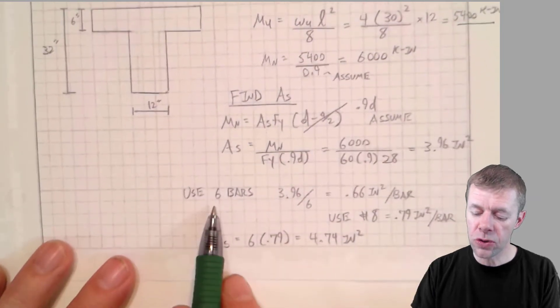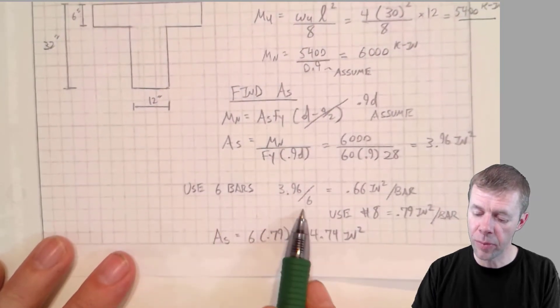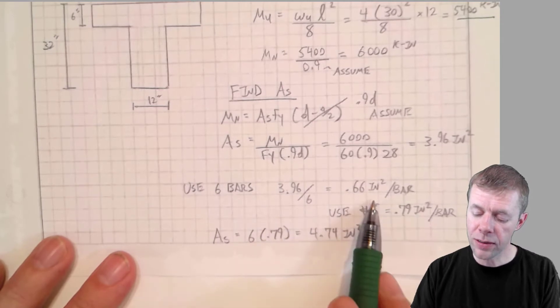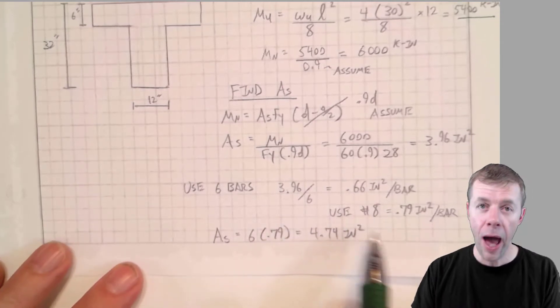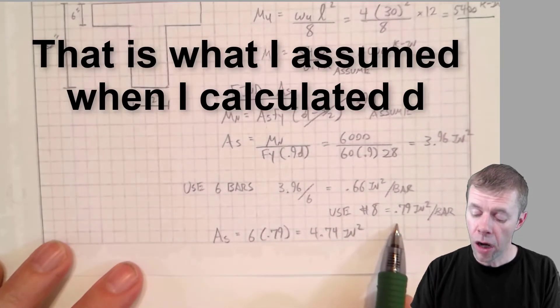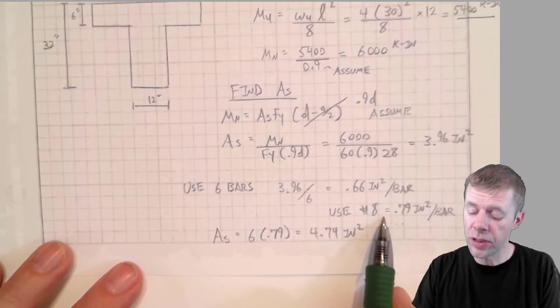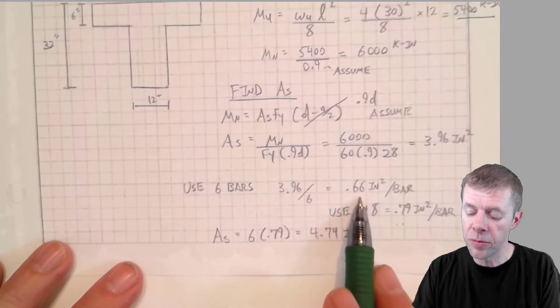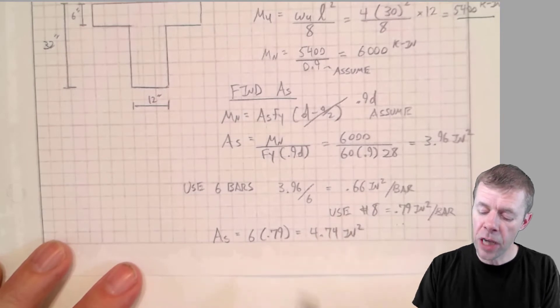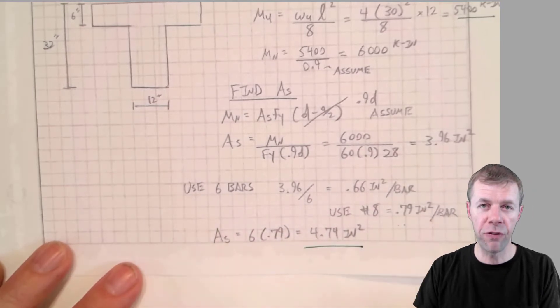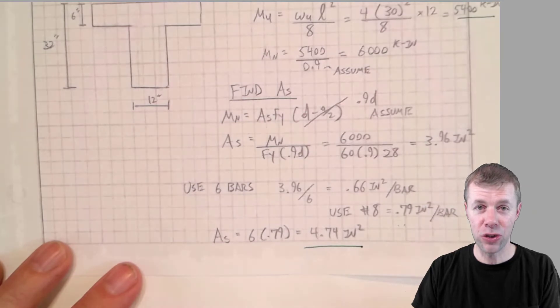And I'm gonna use 6 bars. So 3.96 divided by 6 is 0.66 inches squared per bar. And I'm gonna use a number 8 bar, because I went into a table and I looked up all the bars and a number 8 bar was just a little bit larger than this. And that means I'm providing 4.74 inches squared of steel.